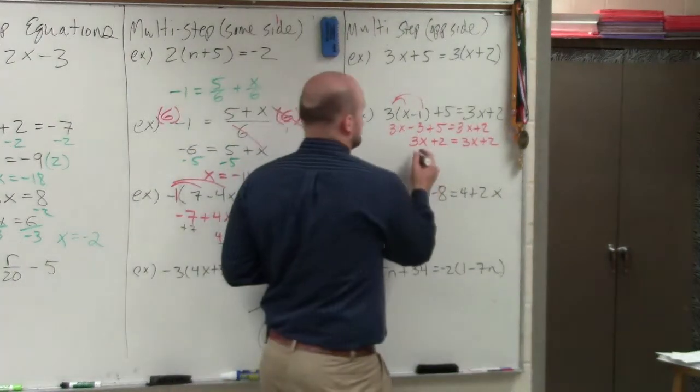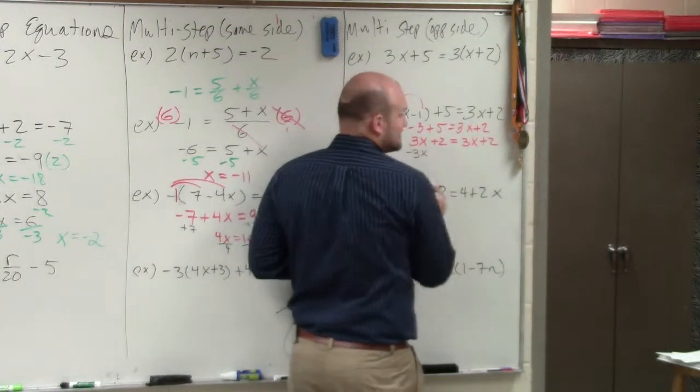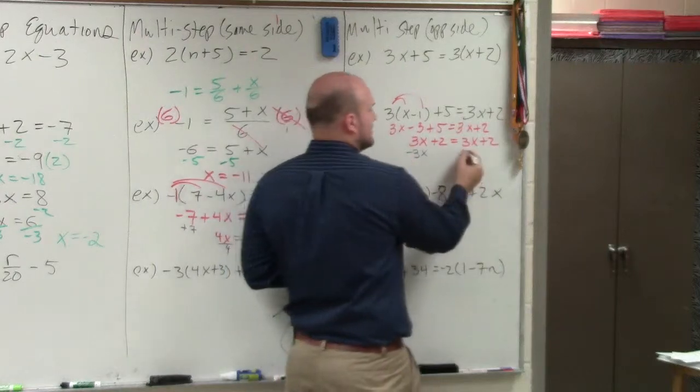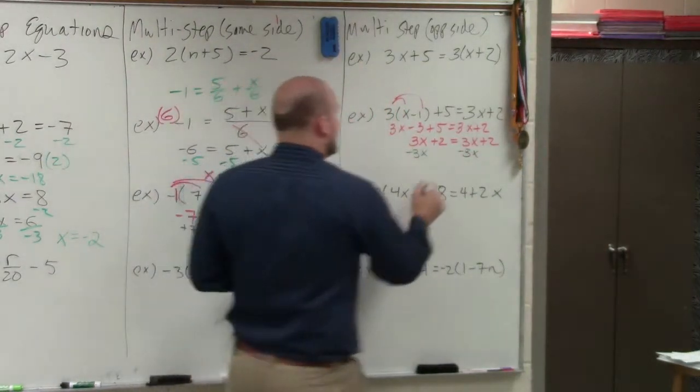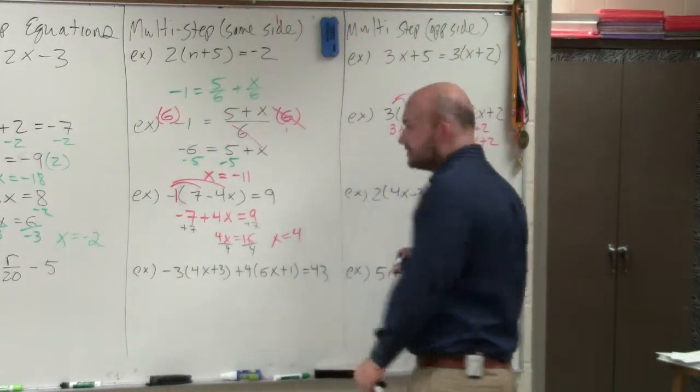So what happens is if I subtract the 3x, we want to get rid of the 3x on the left side, and I have to subtract the 3x on the right side, I end up with the equation 2 is equal to 2.